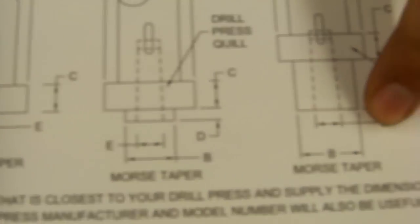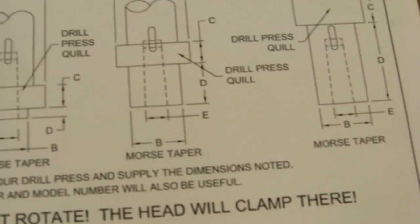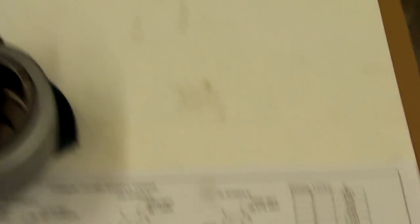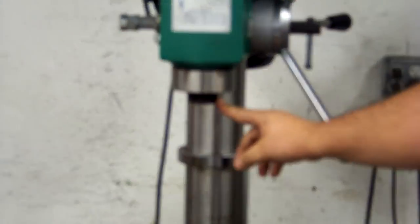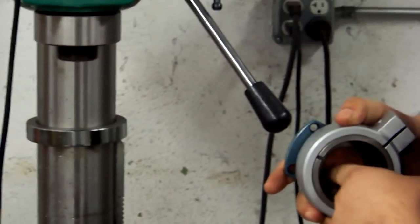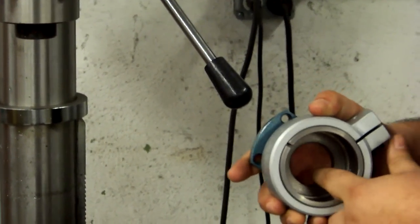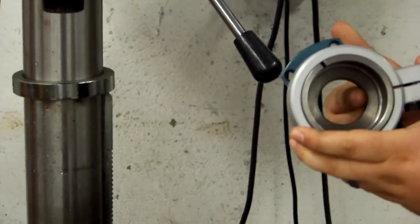You'll then look to the PDF again, and see the B-dimension, that is the lip right underneath the quill, mostly in Morse taper settings, as you see here. This is important because when an adapter is clamped on, you'll see that the Morse taper, or the Jacobs taper, will simply slide in right inside here.